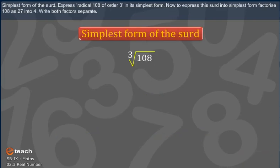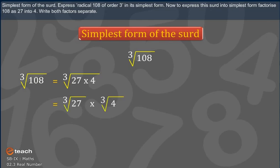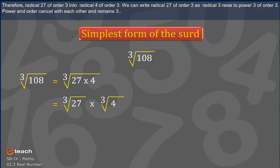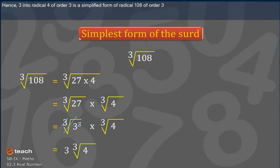Simplest Form of a Surd: express the cube root of 108 in its simplest form. To express this surd in simplest form, factorize 108 as 27 times 4. Write both factors separately. Therefore: the cube root of 27 times the cube root of 4. We can write the cube root of 27 as the cube root of 3 raised to the power 3. The power and order cancel each other and we are left with 3. Hence, 3 times the cube root of 4 is the simplified form of the cube root of 108.